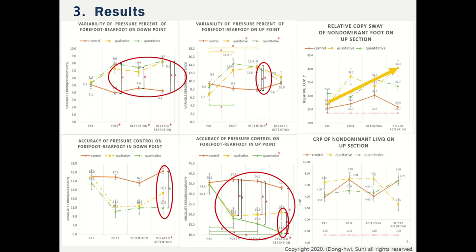There were no significant differences in continuous relative phase. However, at the delayed retention test, the qualitative group tended to change their coordination pattern toward that of experts, shown by the red line, more than the quantitative group. The yellow line goes down, but the green line goes up. There were no significant differences in other groups.